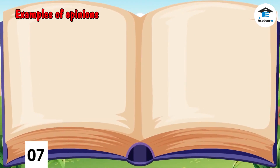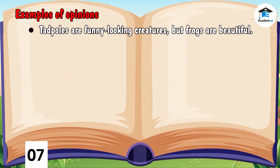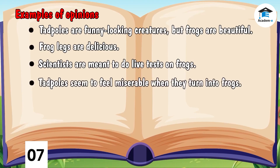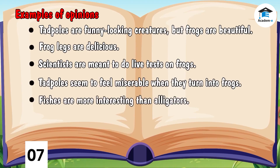Here are examples of sentences that are based on someone's opinion. Tadpoles are funny-looking creatures, but frogs are beautiful. Frog legs are delicious. Scientists are meant to do live tests on frogs. Tadpoles seem to feel miserable when they turn into frogs. Fish are more interesting than alligators.